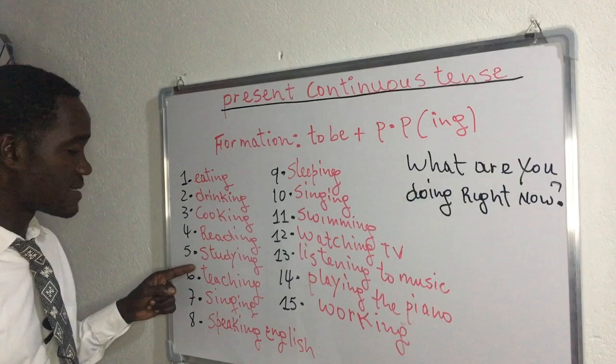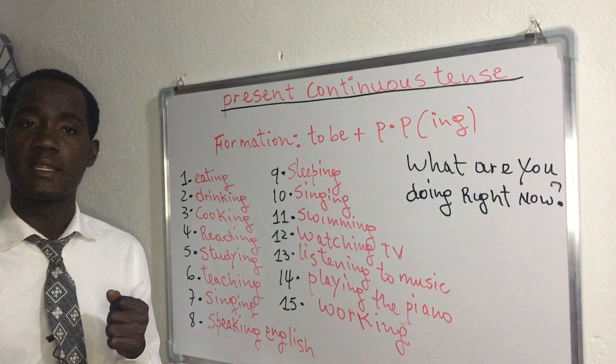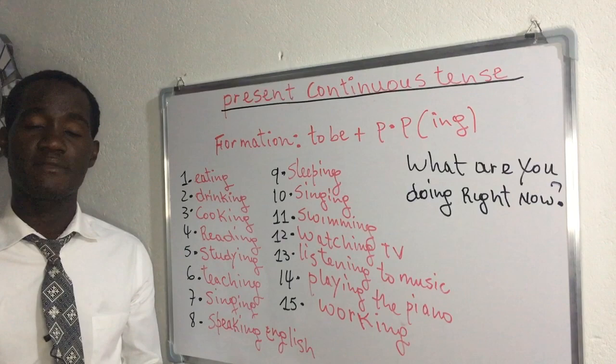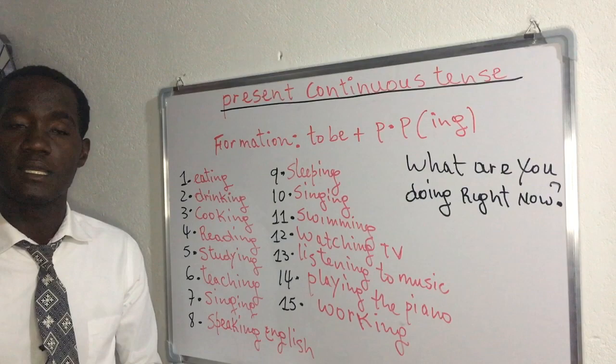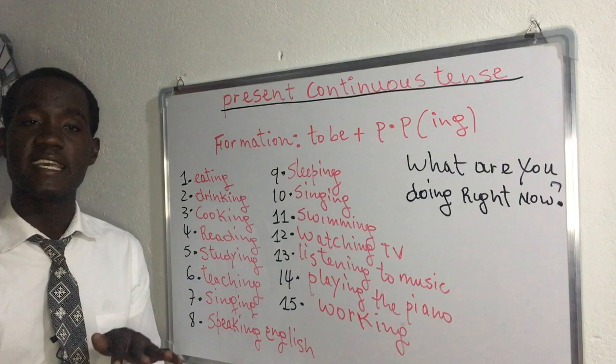The next verb is 'study' — the present participle is 'studying.' What are you doing? I'm studying. If you have an exam, you have to study. Hey, what are you doing? — I'm studying. Mwen ap etidye. Then we have 'teach,' meaning anseye — the present participle is 'teaching.'